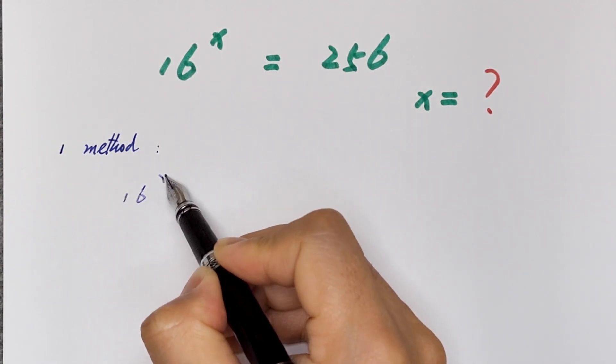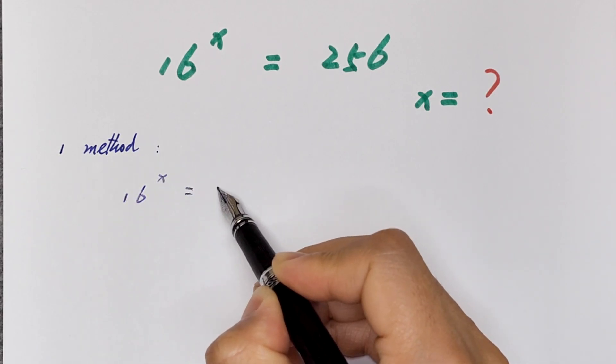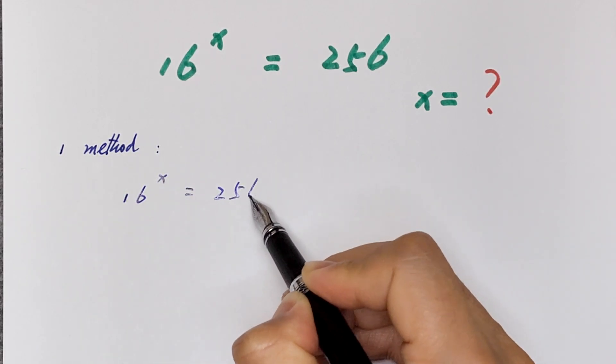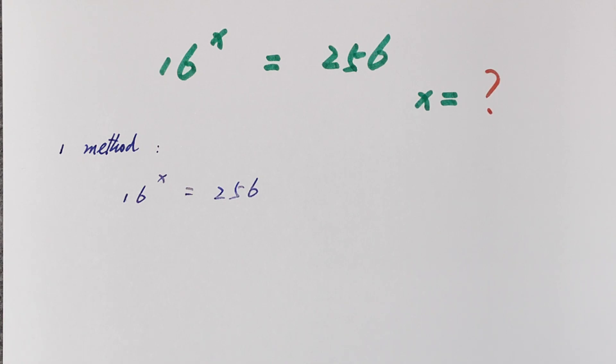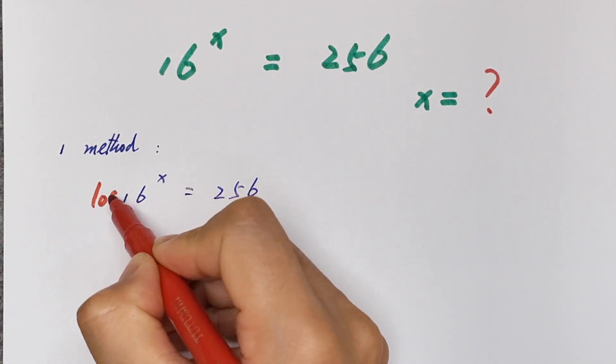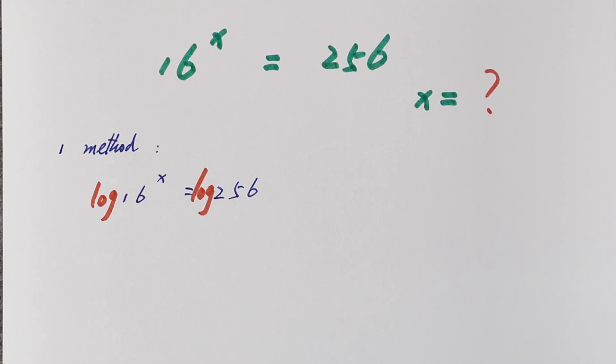16 to the power x is equal to 256. We will apply log on both sides. So it'll be log 16 to the power x is equal to log 256.